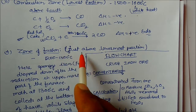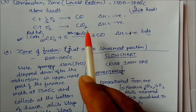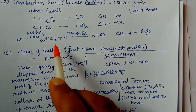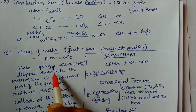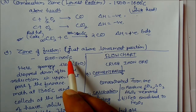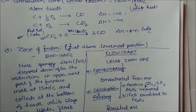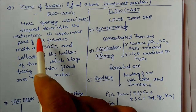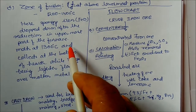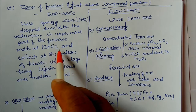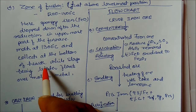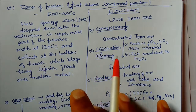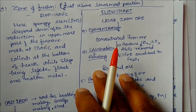The fourth zone is the zone of fusion, just above the lowest portion, at 1200 to 1500 degrees centigrade. Here, sponge iron drops down after reduction in the uppermost portion of the furnace, melts, and collects at the bottom of the hearth, while the lighter slag floats over the molten iron.